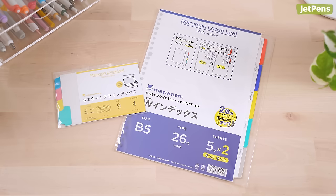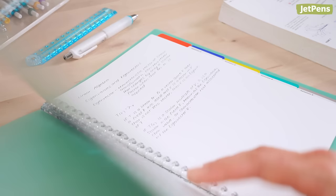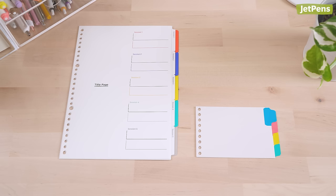Dividers with index tabs make it easy to flip to the right section of your binder. They're especially useful for students who use the same binder for multiple classes. The dividers come in two sizes, for B5 and Mini binders.